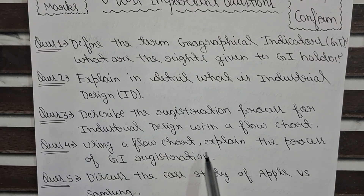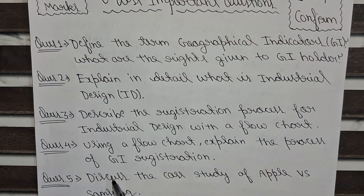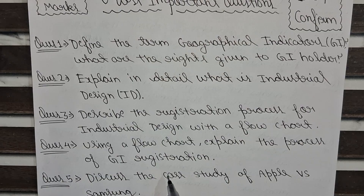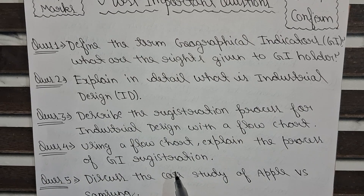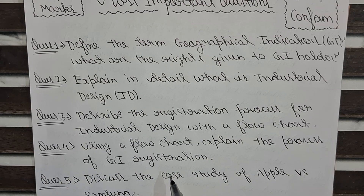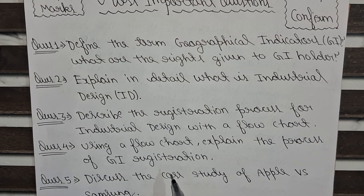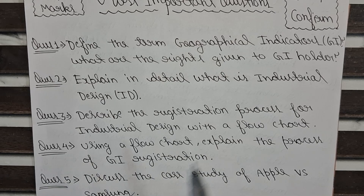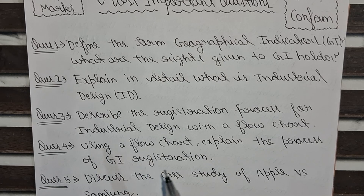Our fourth question is: using a flowchart, explain the process of GI registration. Here we explain the GI registration process in a systematic flowchart form, including application, examination, publication, opposition, and registration.